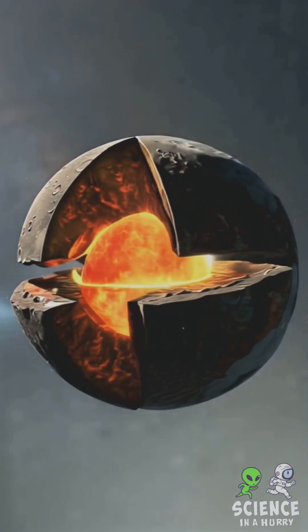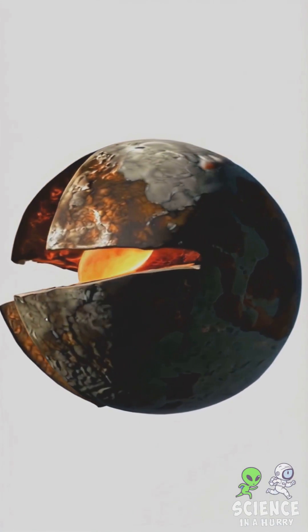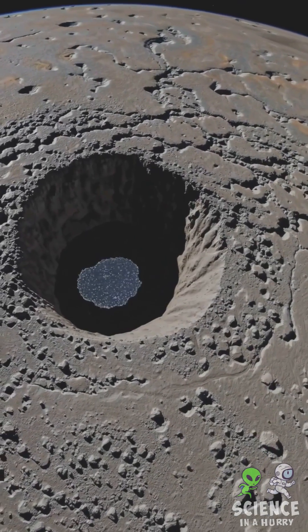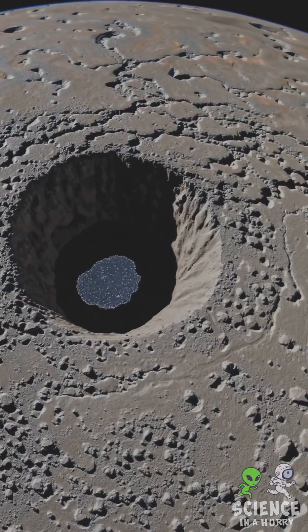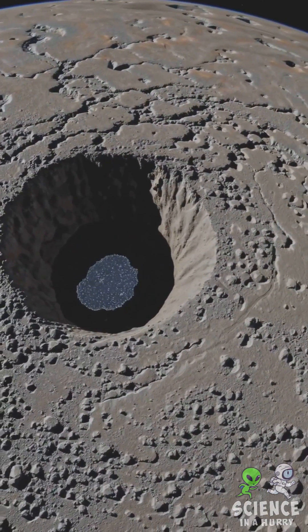Surprisingly, Mercury has a molten core, contributing to its weak magnetic field. Evidence also suggests that water ice hides in shadowed craters at its poles, protected from the Sun's relentless heat.